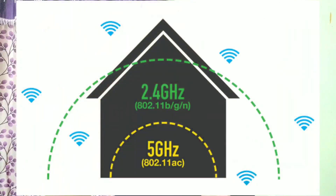For 5 GHz, the frequency is higher but the range is lower. For 2.4 GHz, the frequency is lower but the range is greater. So 2.4 GHz gives you more range but lower speed, while 5 GHz gives you less range but higher speed.